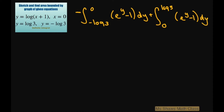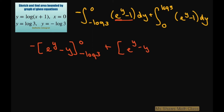When we integrate this, the antiderivative of e to the power of y minus 1 is e to the power of y minus y. So this piece is going to be negative, evaluated from negative log of 3 to 0. And then the other piece is going to be positive, the same thing, evaluated from 0 to log of 3.